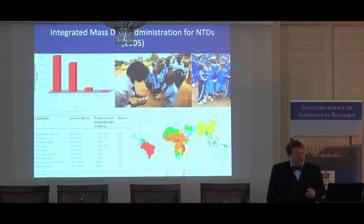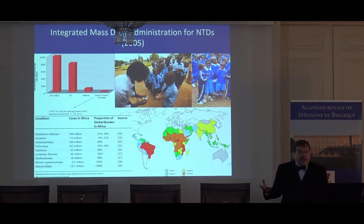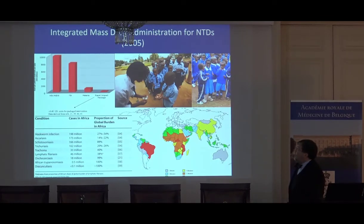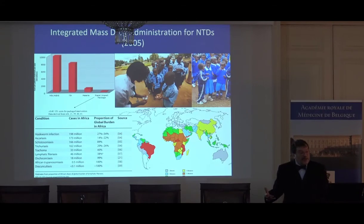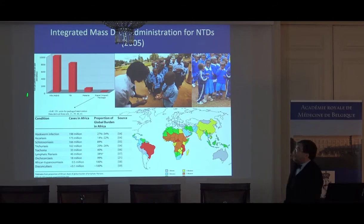Our first attempt to address them was to propose a package of medicines. Since the medicines were being donated by major pharmaceutical companies, we put them together in what we call the Rapid Impact Package — including albendazole or mebendazole for intestinal worm infections, praziquantel for schistosomiasis, ivermectin for filarial infections and onchocerciasis, and azithromycin for trachoma — for less than 40 U.S. cents per person per year, compared to the cost of antiretroviral or anti-malarial drugs.